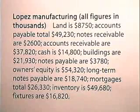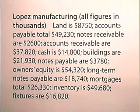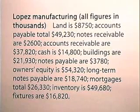Now let's prepare a balance sheet. Lopez Manufacturing has land worth $8,750. Accounts payable total $49,230. Notes receivable are $2,600. Accounts receivable are $37,820. Cash is $14,800. Buildings are $21,930.